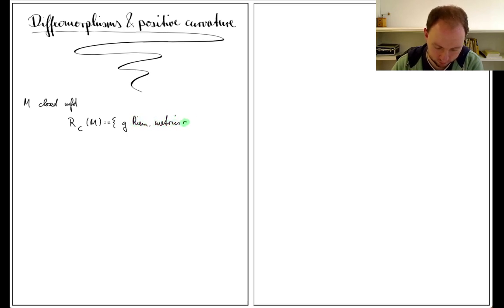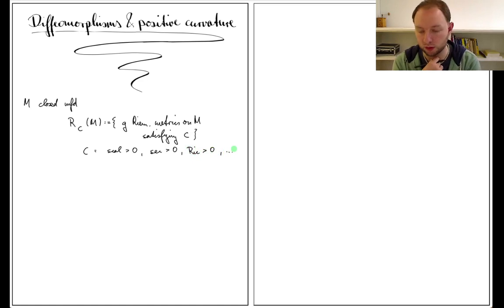We define Rc(M) to be the space of Riemannian metrics on M satisfying property C, where C is usually some kind of curvature condition, like positive scalar curvature, positive sectional curvature, positive Ricci curvature, and so on.